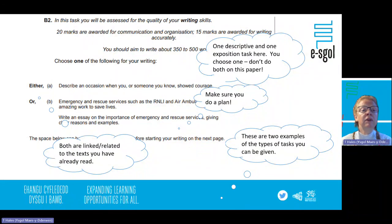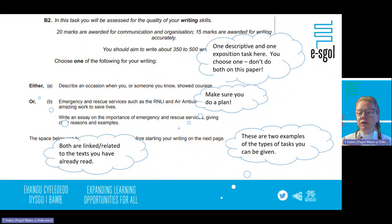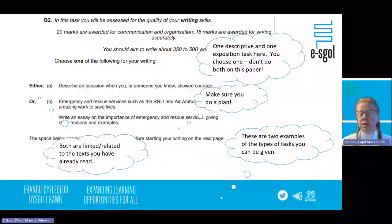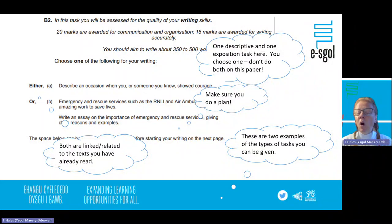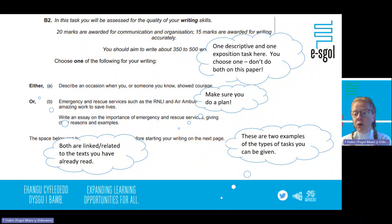You're going to be assessed for the quality of your writing. There are 20 marks for communication and organisation — your ideas — and 15 marks for writing accuracy. You've got to write between 350 and 500 words, which for most people is two to three sides of A4. You should be looking at this when doing practices with your teacher, thinking about how much you write in the time you've got. Aim to write quality work that also covers the minimum word count.